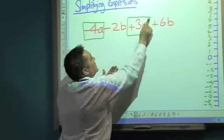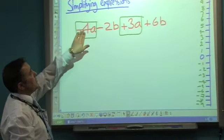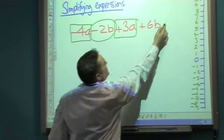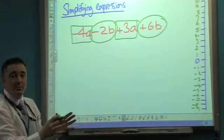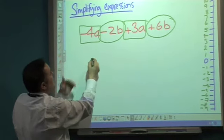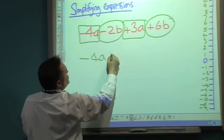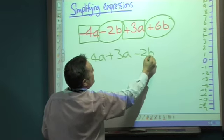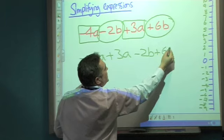Any more a's? Yeah. And make sure, again, we're taking the sign. It's a minus 4a. Don't forget that. And then identify the b's. Simply now, let's collect them together. Minus 4a. Plus 3a. Minus 2b. Plus 6b.